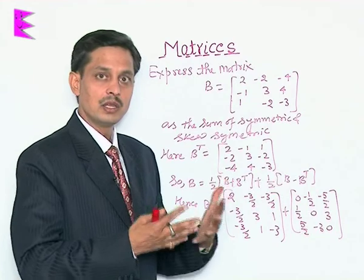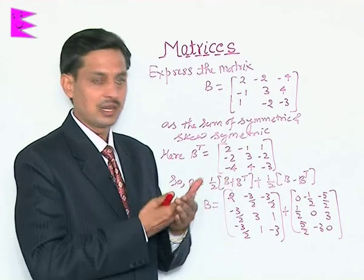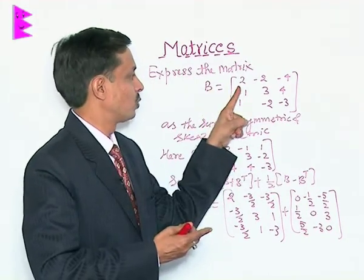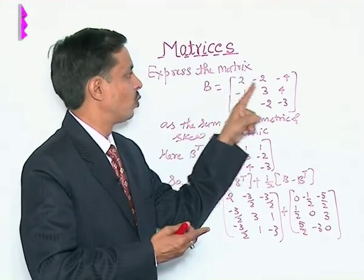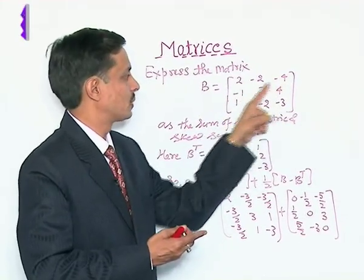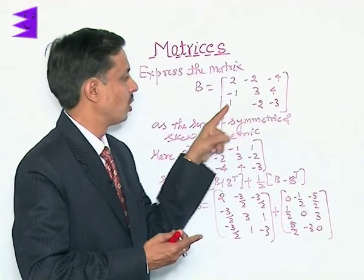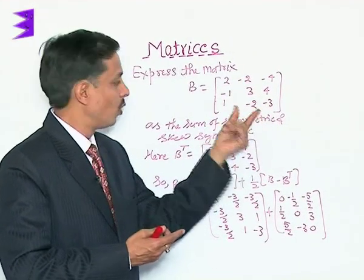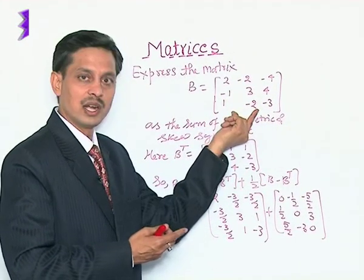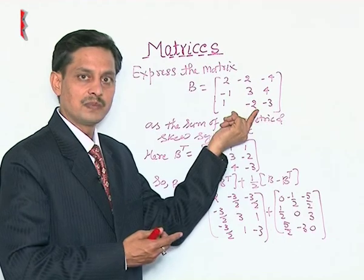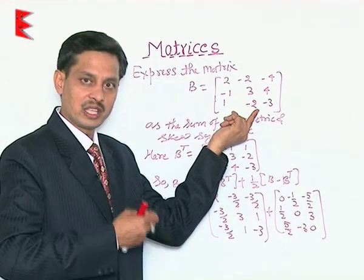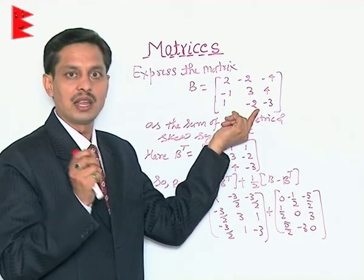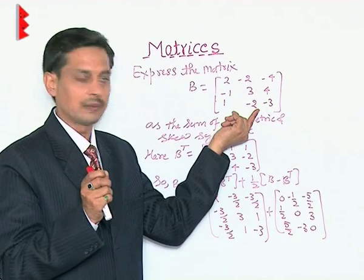Now, what is B? We will start with B as the square matrix: [2, -2, -4; -1, 3, 4; 1, -2, -3]. We need to express this matrix as the sum of a symmetric and a skew-symmetric matrix.